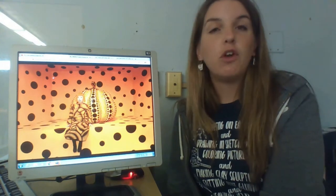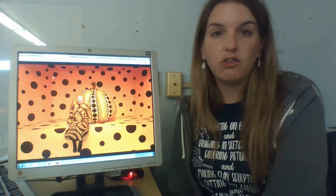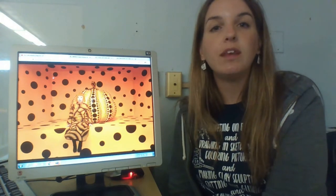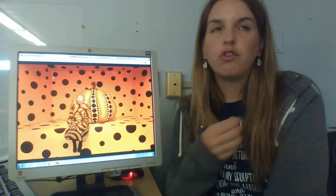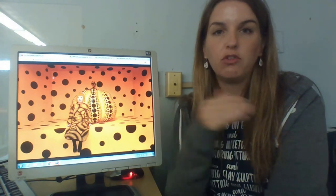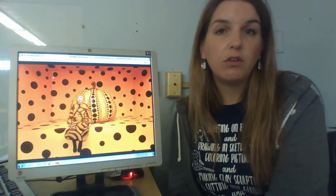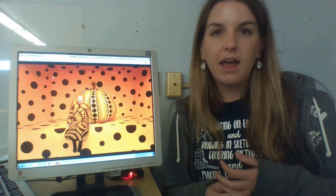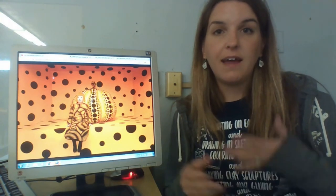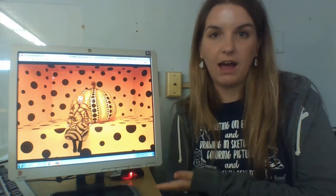Something to know about Yayoi Kusama is that as a young child she started experiencing hallucinations, which means she started seeing strange shapes and objects in front of her when she was just looking around as a child. And a lot of this included interesting abstract shapes and polka dots. And that kind of comes through in a lot of her artwork with a lot of the dots that she has.